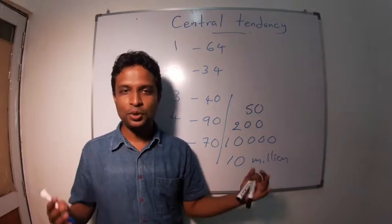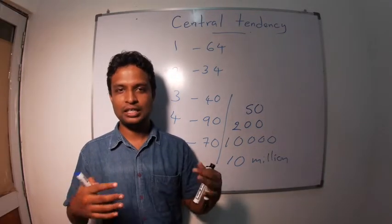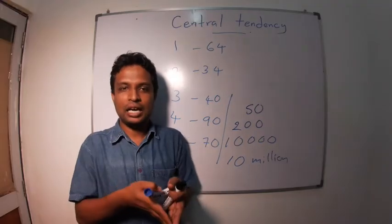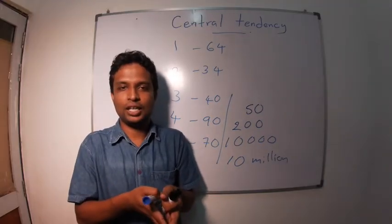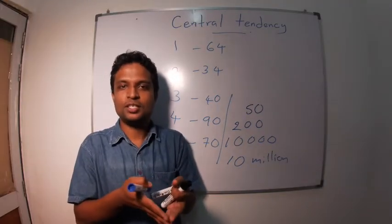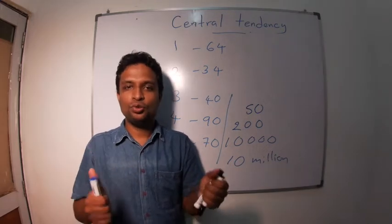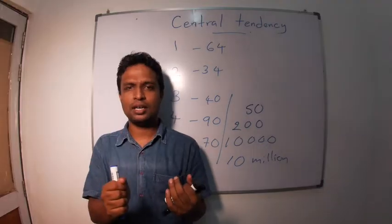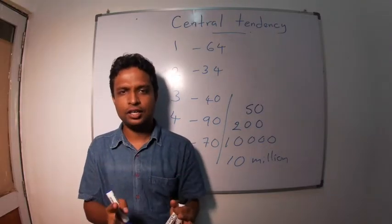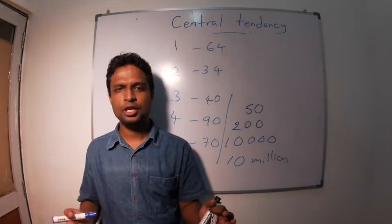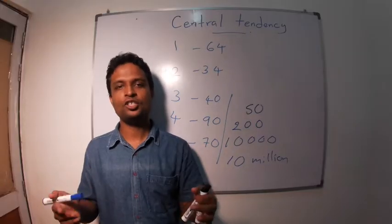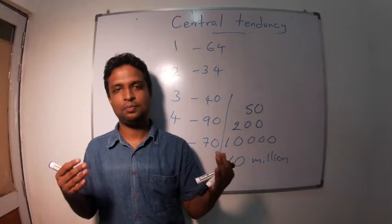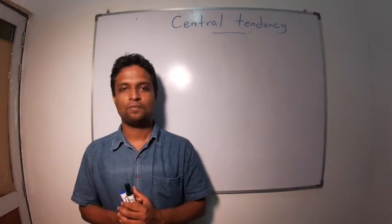The best measure to summarize the data is getting the central tendency. Central tendency means where is the majority. Generally, majority are at center. So we can get an idea about where's the majority. To do that we have to get average. You need to understand that average is a general term, even though we refer to average for routinely described mean.